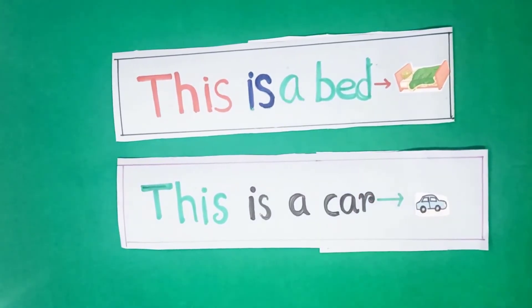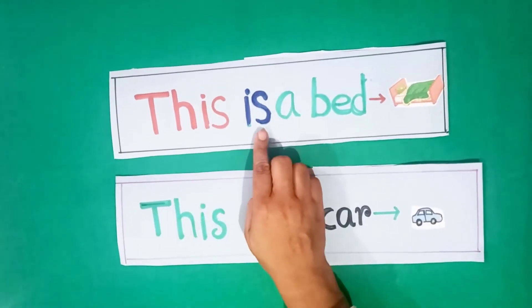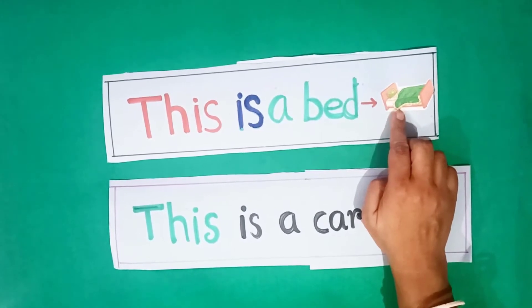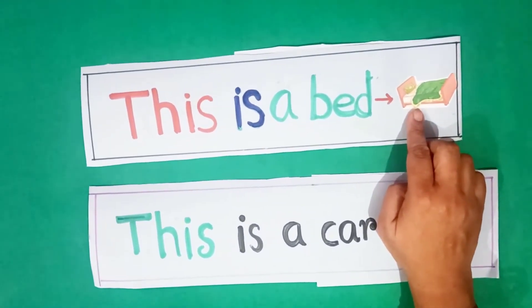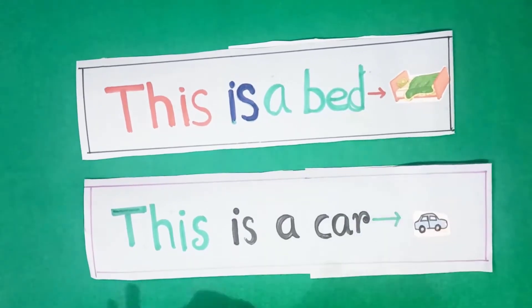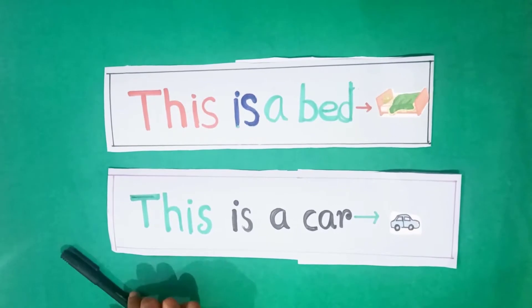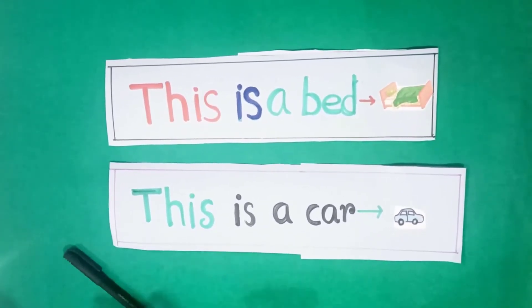But like this, in this sentence, you can see this is a bed. See, look at the bed, it is near, near to us. And when the things is far from you, look at the pen. It is near to me. That time we are using this is a pen.